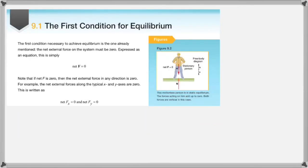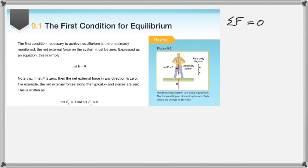For equilibrium, two conditions must be satisfied. The first condition: looking at the forces acting — the weight of a person acts vertically down, and the normal reaction acts vertically up. These two forces are balanced, meaning the net force is zero. This must be true along the X, Y, and Z axes — that is the first condition of equilibrium.